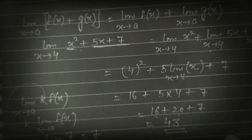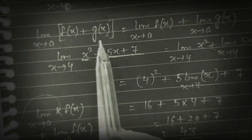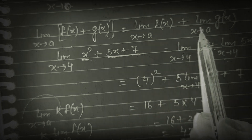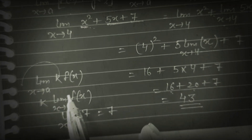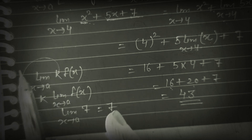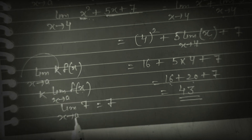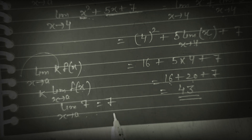So the algebra of limits tells us: if two functions are in addition, put limit on both. If it is a constant times a function, take the constant outside. If it is a constant alone, the limit has no effect — constant stays as it is.